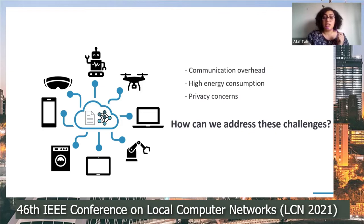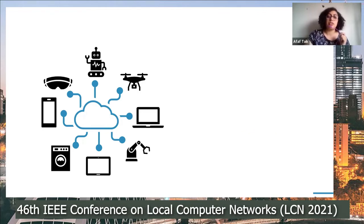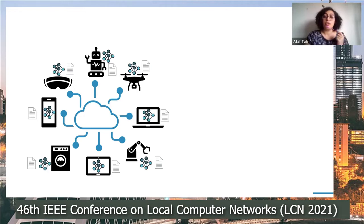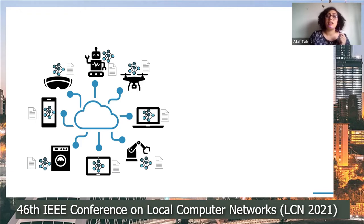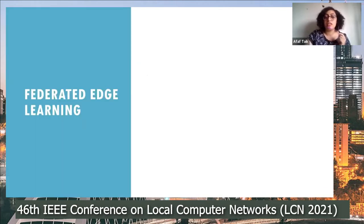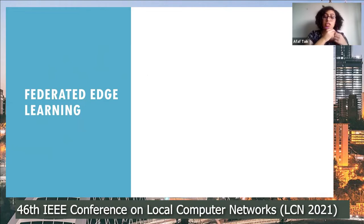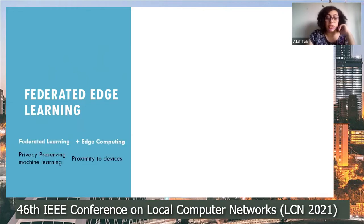A great solution would be to push the analysis from the cloud to the edge of the network, near or even on the devices that generate the data. However, this is not a straightforward solution because we have to adapt the analysis and machine learning algorithms to the new setting. This is where federated edge learning comes in. Federated edge learning has emerged as the go-to technique for privacy-preserving machine learning at the edge of the network.